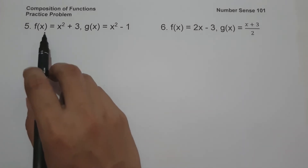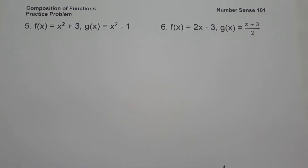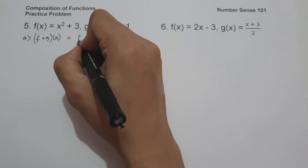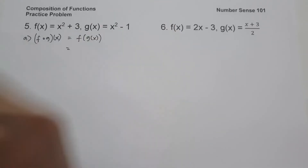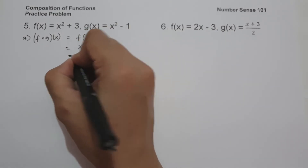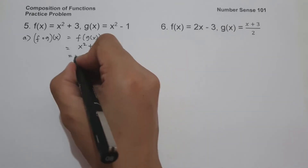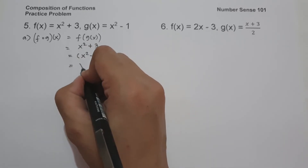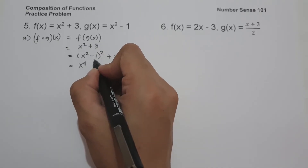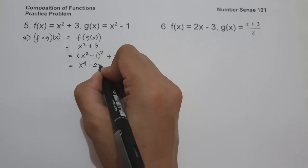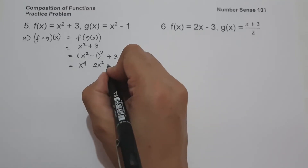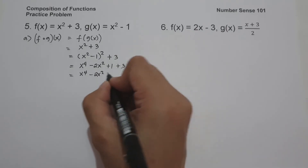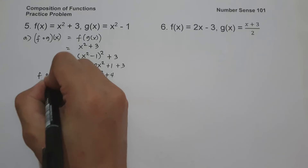On number 5, f of x equals x squared plus 3 and g of x equals x squared minus 1. Let us find f circle of g of x, and this will be f of g of x. f of x is x squared plus 3, and the value of x is g of x, which is x squared minus 1. So this will be x squared minus 1 raised to 2 plus 3. Expanding: x squared times itself is x to the 4th, x squared times negative 1 gives negative 2x squared, and negative 1 times itself is positive 1 plus 3. So this gives us x to the 4th minus 2x squared plus 4, and this is f circle of g of x.